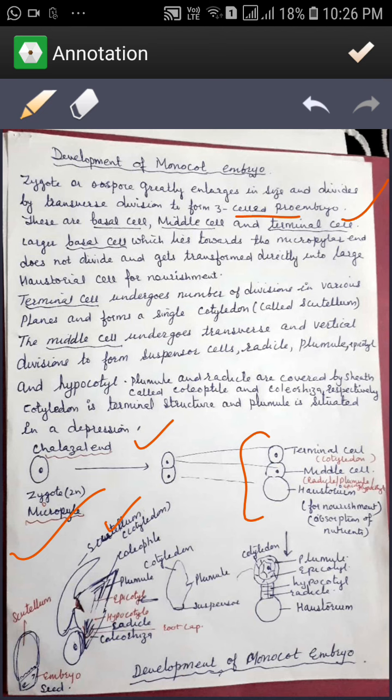It does not divide, but it transforms directly into the haustorial cell for nourishment. This is the haustorial cell for nourishment.